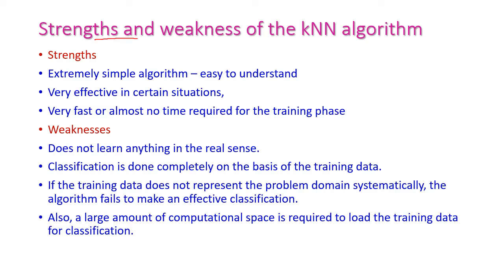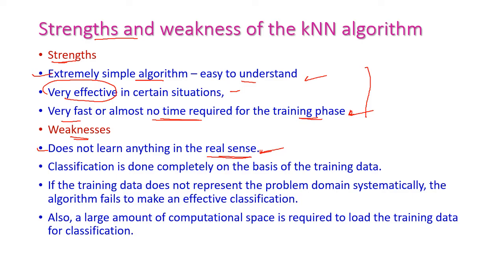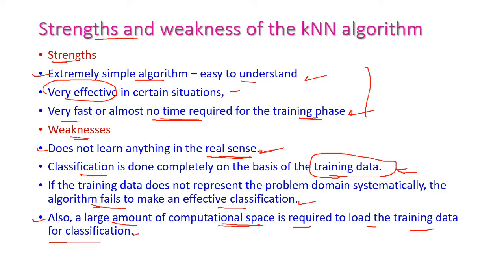Regarding strengths and weaknesses of KNN: Strengths — KNN is an extremely simple algorithm, easy to understand, very effective in certain situations, and requires almost no time for the training phase. Weaknesses — it does not learn anything in a real sense; classification is done entirely based on training data. If there is insufficient training data, it fails to make effective classifications. Also, a large amount of computational space is required to store the training data.